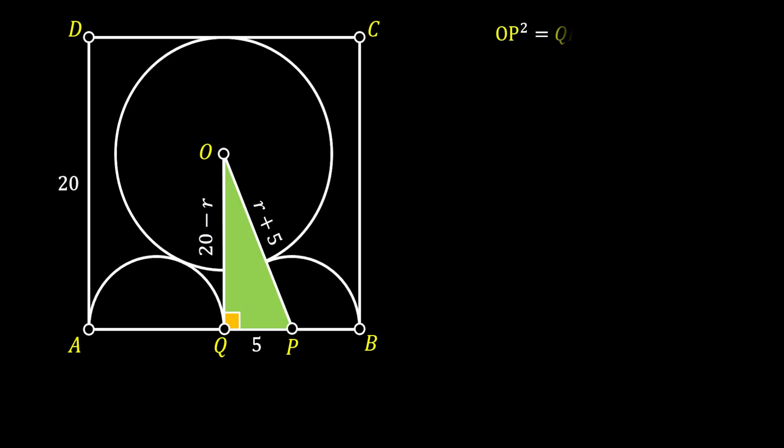We can write the Pythagorean theorem. We can say that hypotenuse OP squared is equal to the leg QP squared plus the leg OQ squared, and we can substitute the values for those lines from our sketch. That's (r+5)² = 5² + (20-r)². We can expand both sides of this equation by using the square of a binomial.